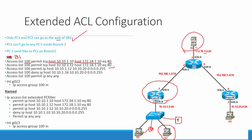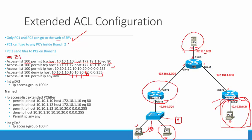Now PC1 can't go to any PCs inside branch 2. Because I said any PCs, I used the network number coming off that branch. PC1 can do a lot of things, but what he can't do is go to anything off that LAN. So: access-list 100 deny IP host 10.10.1.10 going to destination 10.10.20.0 with a wildcard of 0.0.0.255. What that says is: we care about 10, we care about 10, we care about 20, and we don't care what this last octet is. So any time PC1 tries to reach anything on that LAN, it's denied. That takes care of that statement.